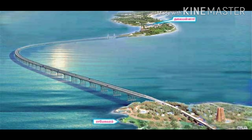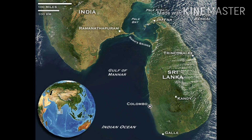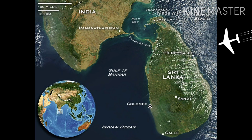A strait is a narrow stretch of water which joins two larger water bodies. For example, the Palk Strait joining the Bay of Bengal and the Indian Ocean.